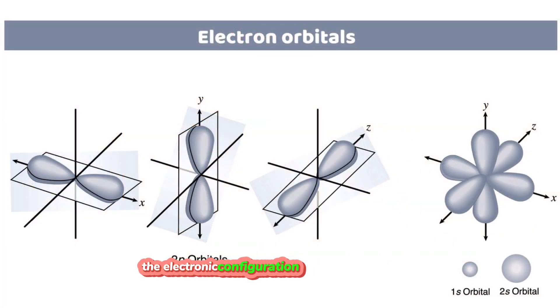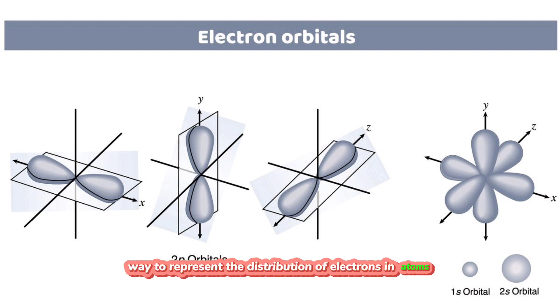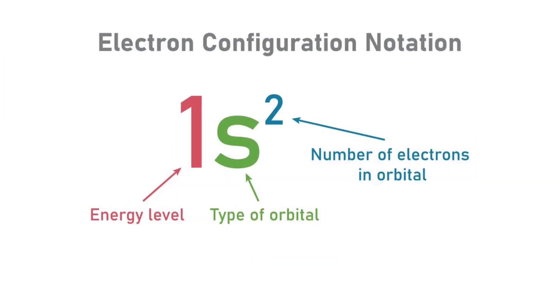The electronic configuration provides a structured way to represent the distribution of electrons in atoms, helping us understand their chemical properties and behavior. The filling order follows the Aufbau principle, which outlines the sequence in which orbitals are filled based on increasing energy levels and sub-levels.